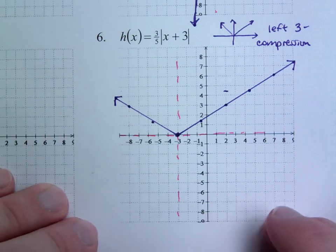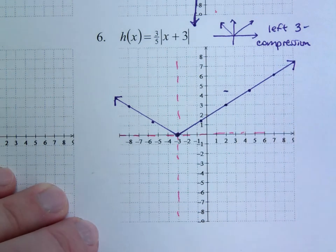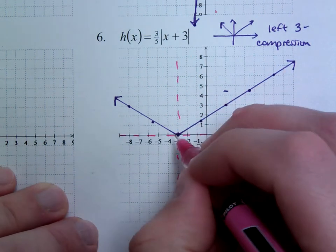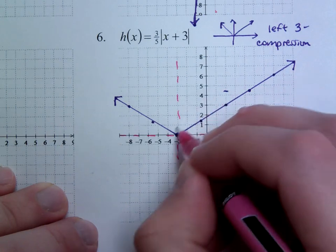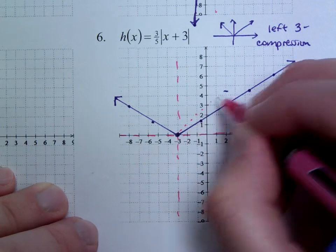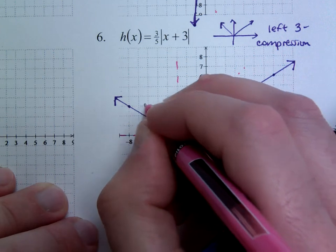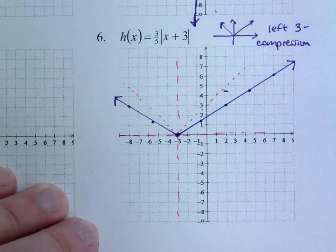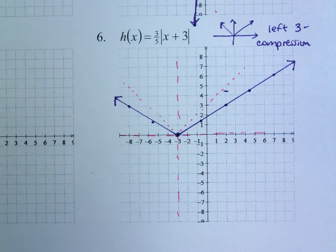You can see that this guy will be just a little bit squattier than the regular absolute value of x. Regular absolute value would have gone up 1, over 1, and so on. So it would have looked like this. So it would have looked something more like that. So you can definitely see that the 3 fifths does have an effect, if ever so slightly. So it is a little bit flatter.